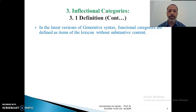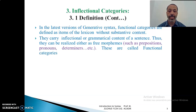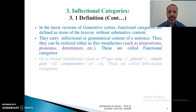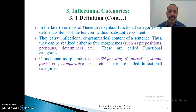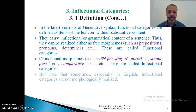In the latest versions of generative syntax, functional categories are defined as items of the lexicon without substantive content. They carry inflectional or grammatical content of a sentence. Thus, they can be realized either as free morphemes, such as prepositions, pronouns, and determiners — these are called functional categories — or sometimes these functional categories can be realized as bound morphemes. In this case, they are called inflectional categories, such as the third person singular -s, the plural -s, the simple past -ed, the comparative -er, the superlative -est, and so on.